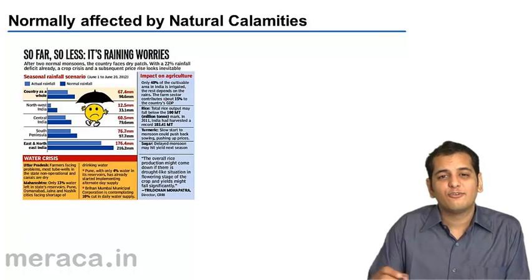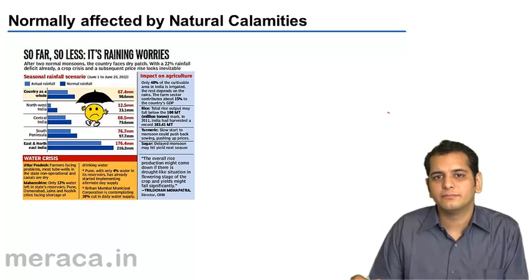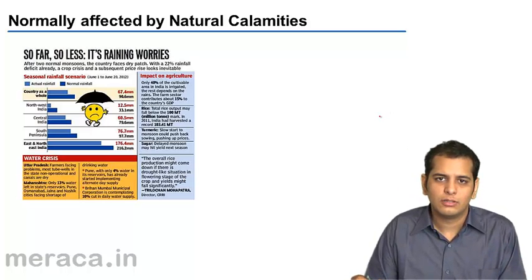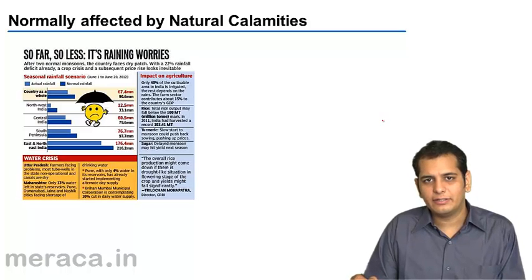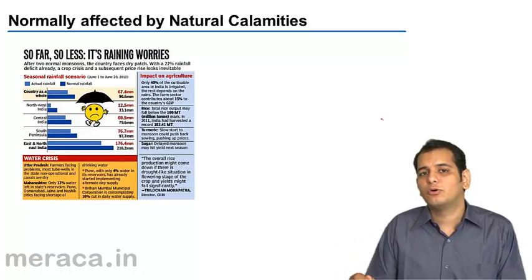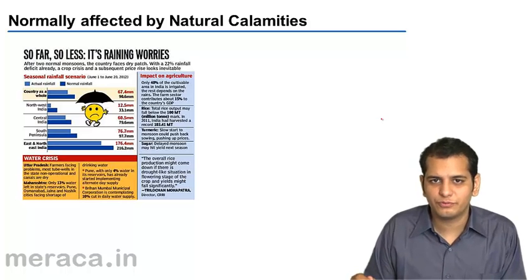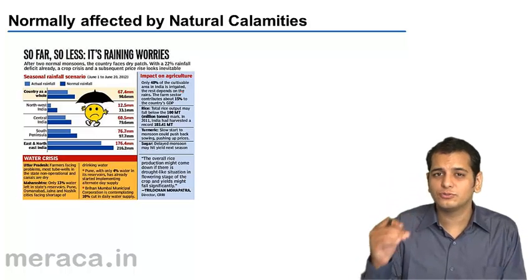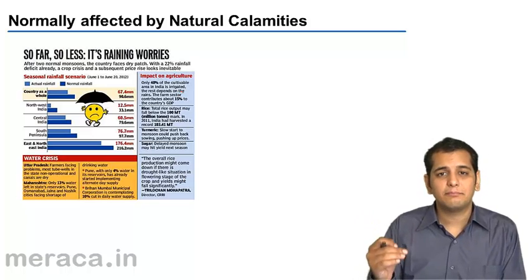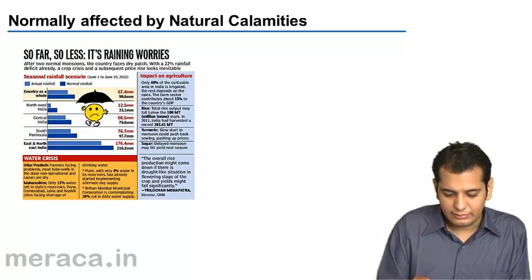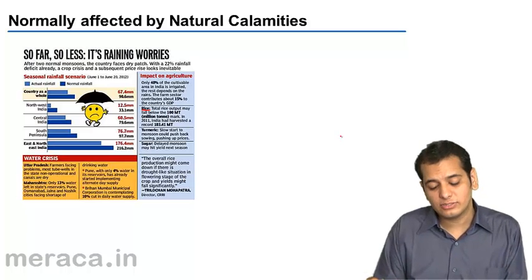Lack of monsoon has affected the supply of various crops in India. The agricultural produce has gone down because India is dependent upon monsoon. Most of the agricultural land in India is not irrigated, so that land depends upon monsoon. If monsoon is not good, the agricultural produce goes down. When the produce goes down, the goods being supplied go down — the supply will reduce. So the monsoon or lack of monsoon has affected the production of rice, and the supply of rice has gone down.